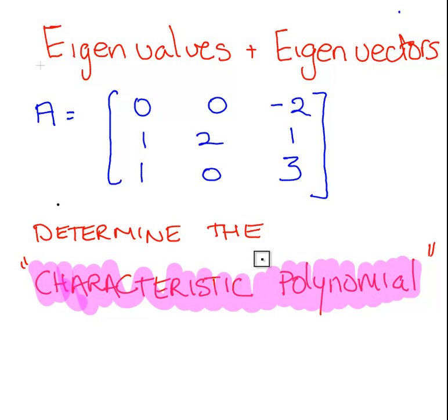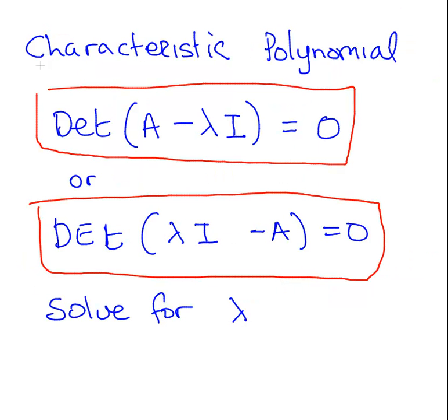So that is sort of a building block on our way to developing eigenvalues and eigenvectors. The characteristic polynomial, also known as the characteristic equation. I will use both names interchangeably.